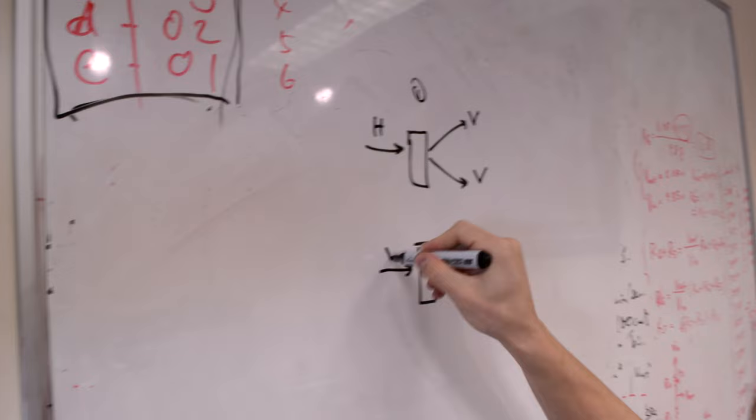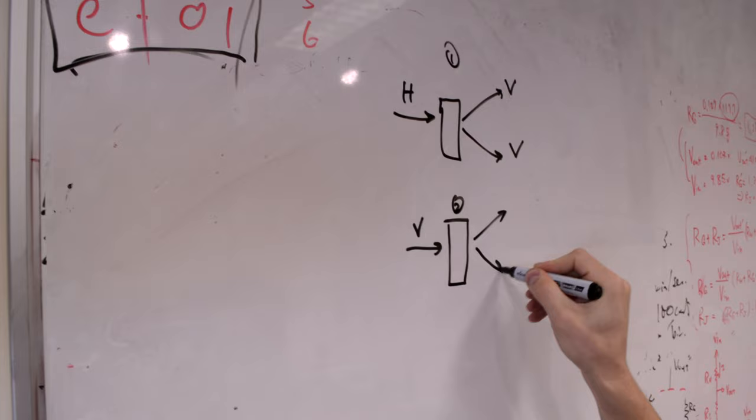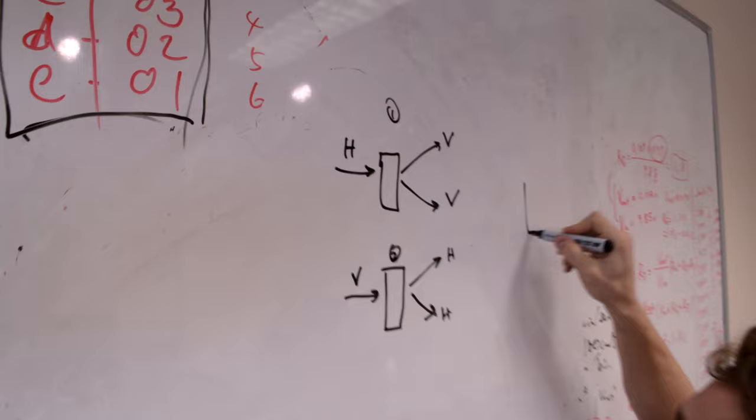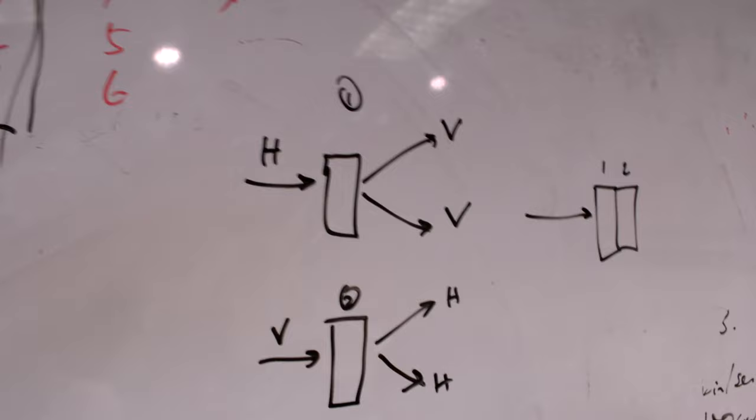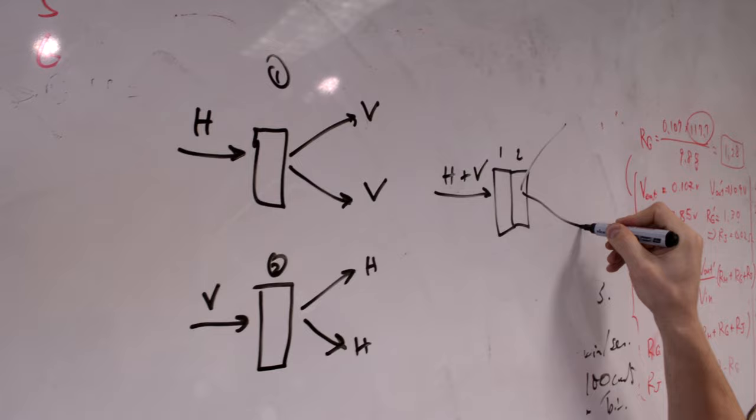Such that if I input vertical light, okay, the photons that come off will be horizontally polarized. You get one of these and one of these, put them up next to each other, okay? Crystal one, crystal two, and you input what we call diagonal light, okay? Diagonal is a mixture of horizontal and vertical. And if you get photons come out, you don't know whether they were created in the first crystal or the second crystal.